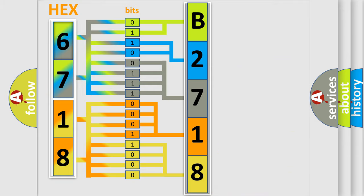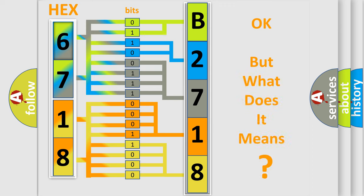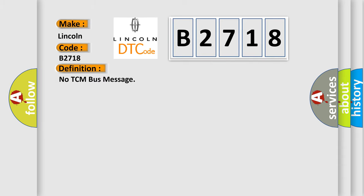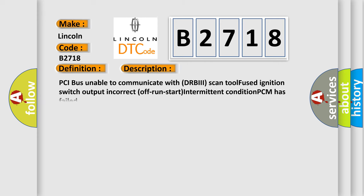We now know how the diagnostic tool translates the received information into a more comprehensible format. The number itself does not make sense if we cannot assign meaning to what it actually expresses. So, what does Diagnostic Trouble Code B2718 interpret specifically for Lincoln? The basic definition is: No TCM bus message. A short description includes: PCI bus unable to communicate with DRBII scan tool, fused ignition switch output, incorrect off-run start, intermittent condition, or PCM has failed.